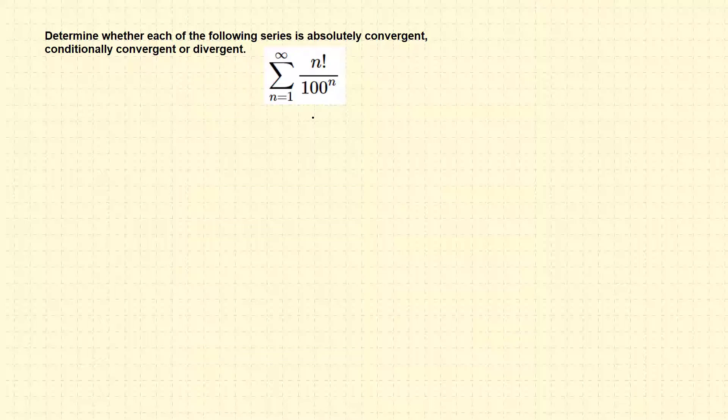We have a series involving factorial, and we know that whenever we have a factorial, we use the ratio test, which is we take a ratio of a_{n+1} over a_n, take absolute value, and look at the limit at infinity.